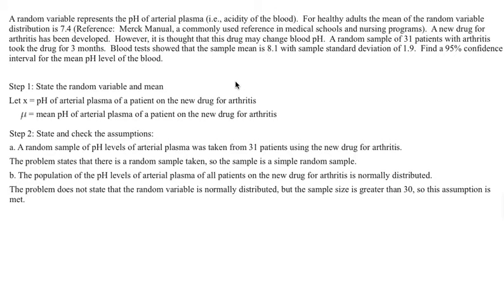Here's an example. A random variable represents the pH of arterial plasma, which is the acidity of the blood. For healthy adults, the mean of the random variable distribution is 7.4. A new drug for arthritis has been developed; however, it is thought that this drug may change blood pH. A random sample of 31 patients with arthritis took the drug for 3 months. Blood tests showed that the sample mean is 8.1 with a sample standard deviation of 1.9. Find the 95% confidence interval for the mean pH level of the blood.